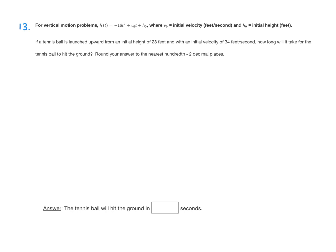In this scenario, if a tennis ball is launched upward from an initial height of 28 feet with an initial velocity of 34 feet per second, how long will it take for the tennis ball to hit the ground? First, the initial height is our h sub 0, and the initial velocity is the v sub 0.